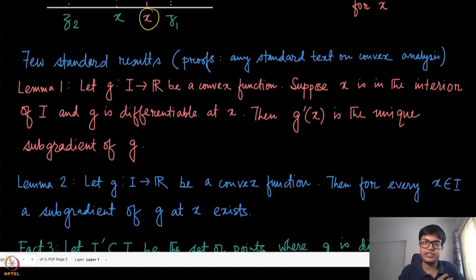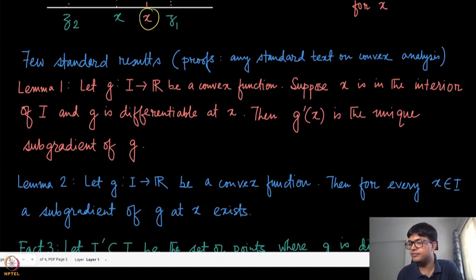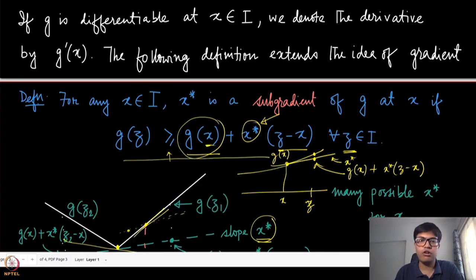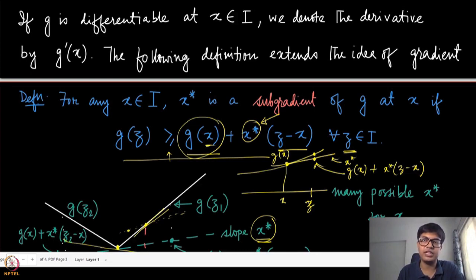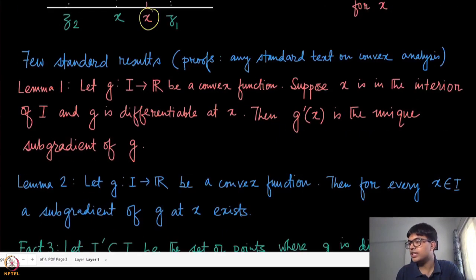Formally, Lemma 1 states: if g is a convex function, x is in the interior of I, and g is differentiable at x, then g'(x) is the unique subgradient of g at x. The proof uses the subgradient inequality for points x + ε and x − ε', applies the fundamental definition of derivatives, and shows that x* is sandwiched between the left and right derivatives, which are equal at differentiable points.